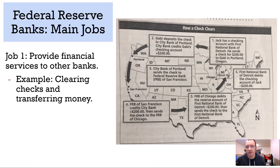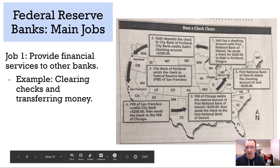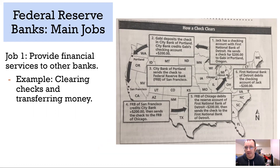So here's how the check thing works, for example. Let's say that Jack writes a check with First National Bank in Detroit and he sends it to Gabby in Portland. Well, Gabby gets the check and she deposits it in the Citibank in Portland.